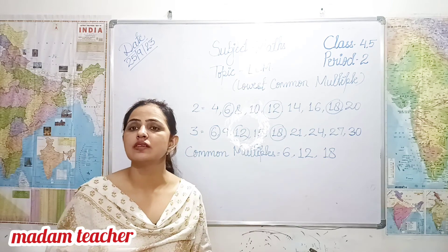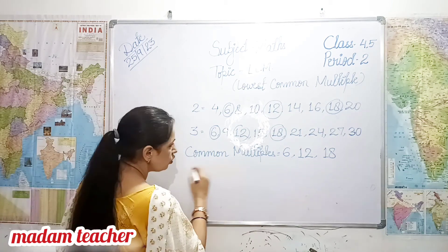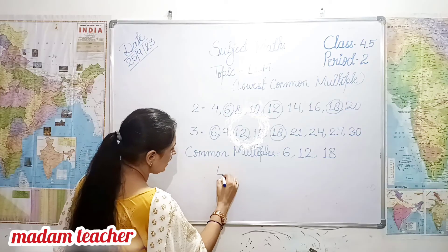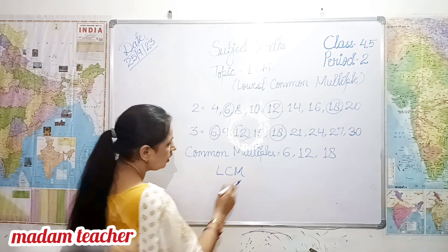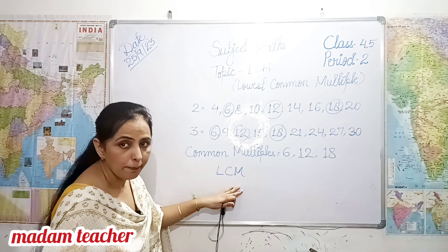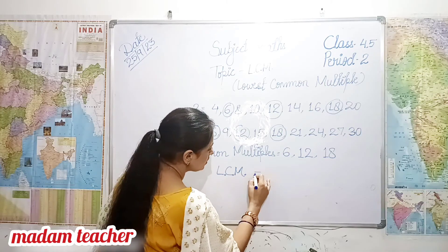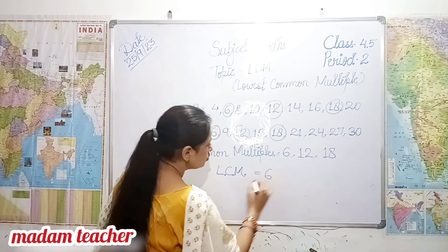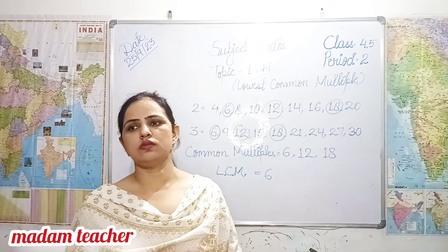The lowest of 6, 12, and 18 is 6. So the LCM — Lowest Common Multiple — is 6. The answer will be 6.